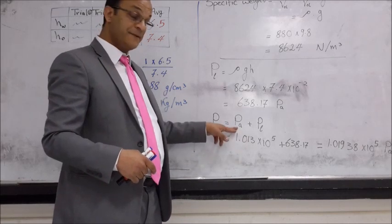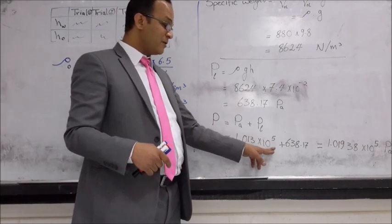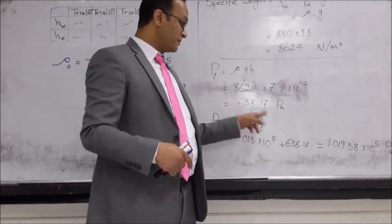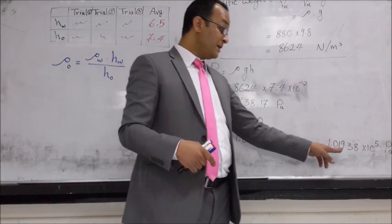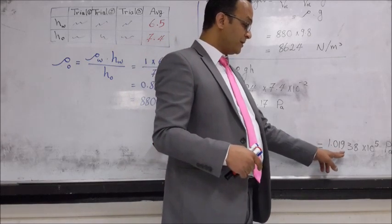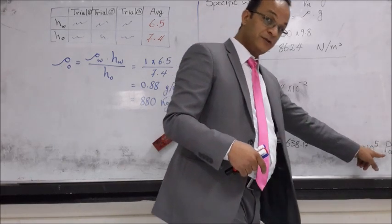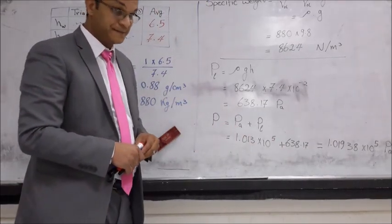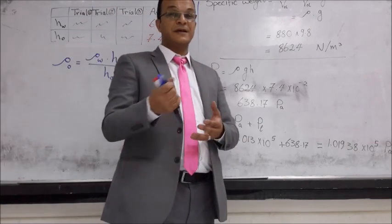So let's replace P_a, 1.013 times 10 power 5, and these are in Pascals, and we will add our final result, which is 638.17. The final product will be 1.013 times 10 power 5, and don't forget the unit. Here, pressure is measured in Pascal. I hope you enjoyed it and have a nice day.